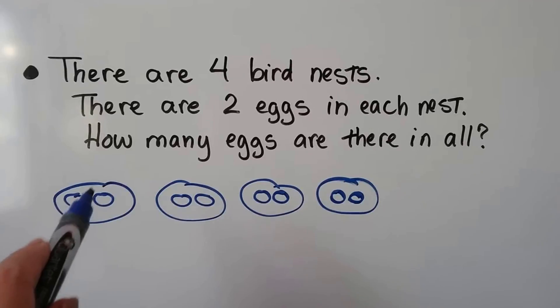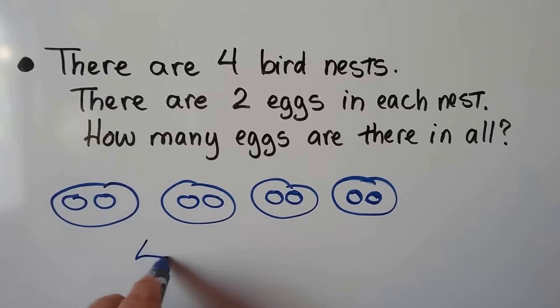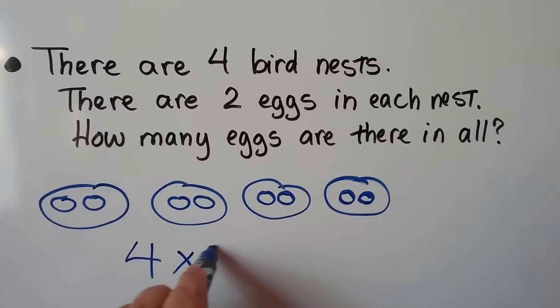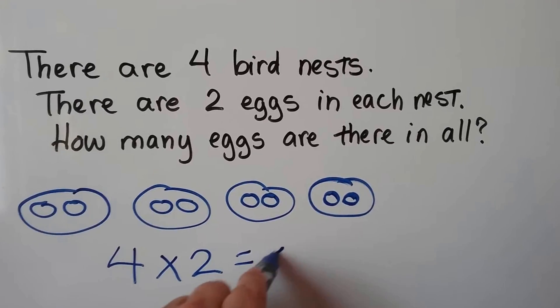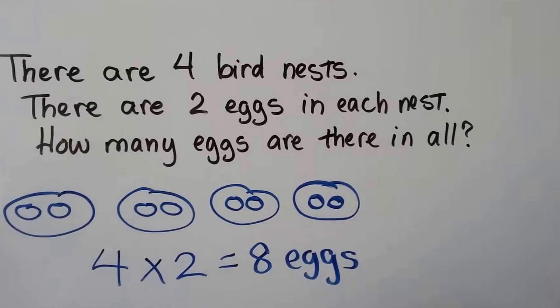We have 2, 3, 4, 5, 6, 7, 8. We have four groups with two in each group, we have eight eggs. Make sure we label that it's eggs.